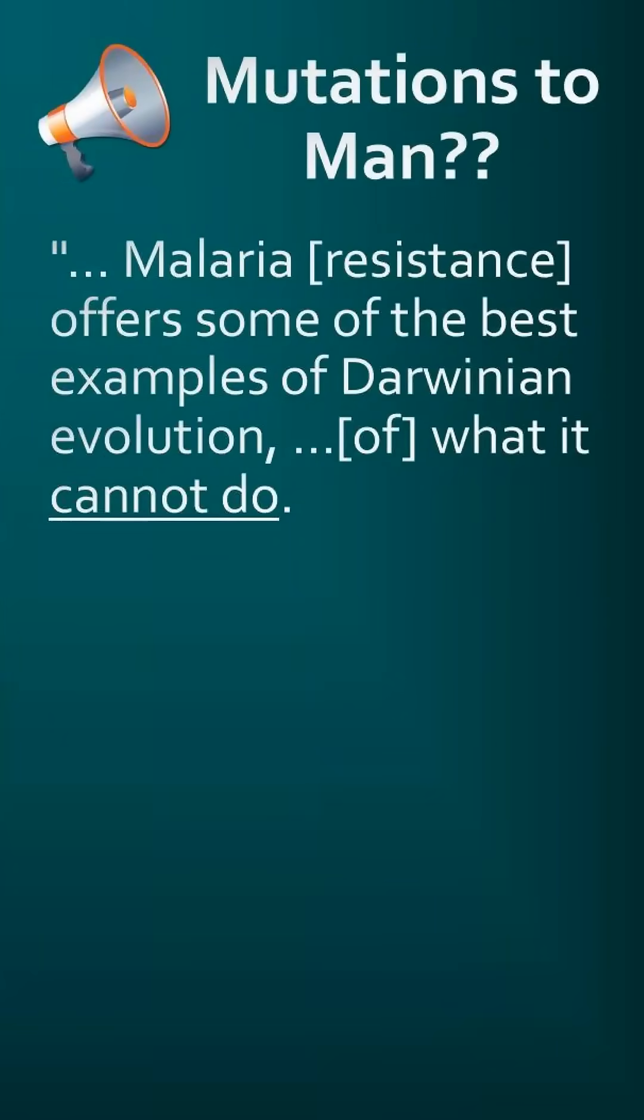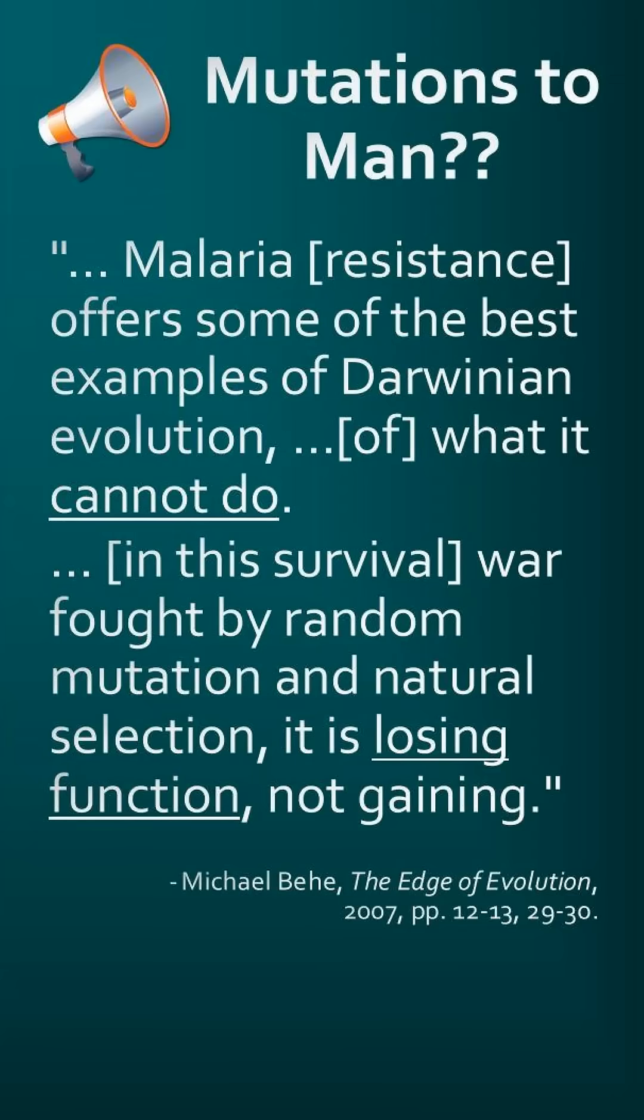Malaria resistance offers some of the best examples of Darwinian evolution, of what it cannot do. In this survival war fought by random mutations and natural selection, it is losing function, not gaining.